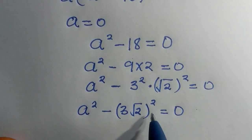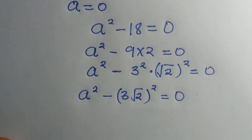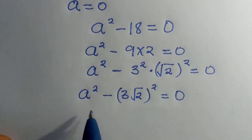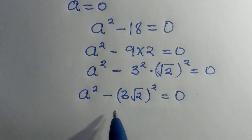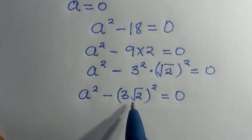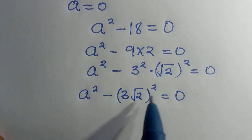So 3 root 2, all squared is still given as 18. Then a is a difference of 2 squared, and we have this kind of expression, a squared minus 3 root 2 squared.